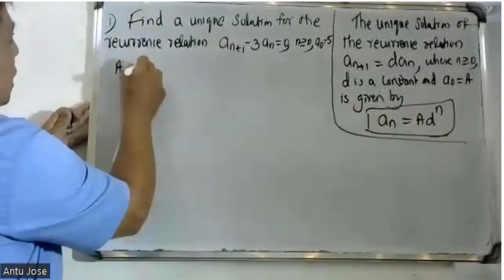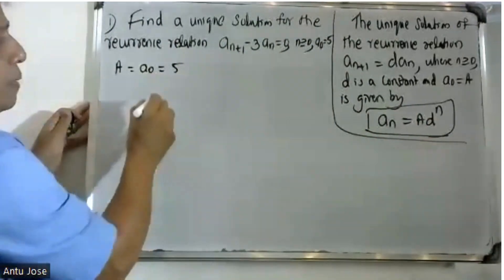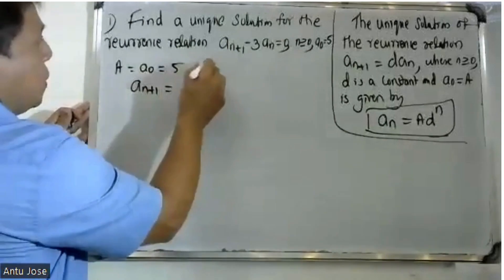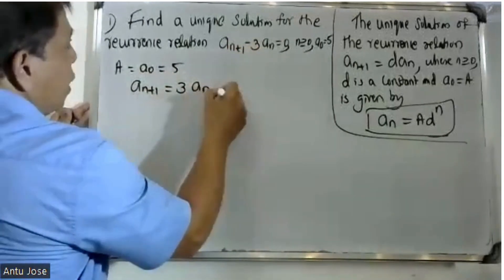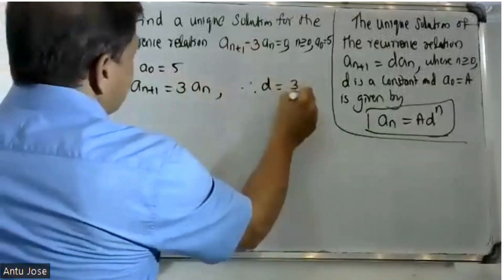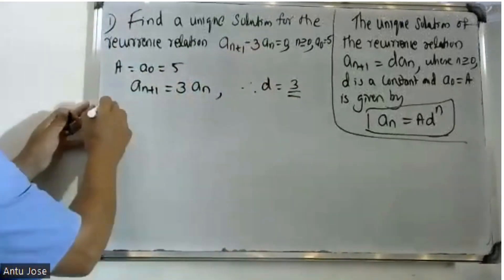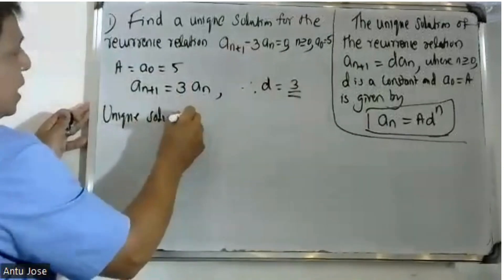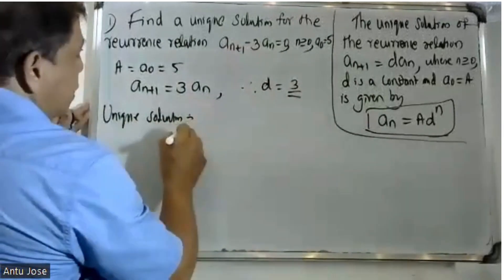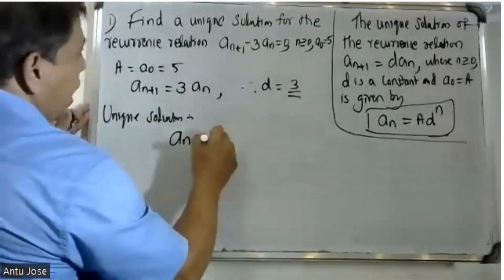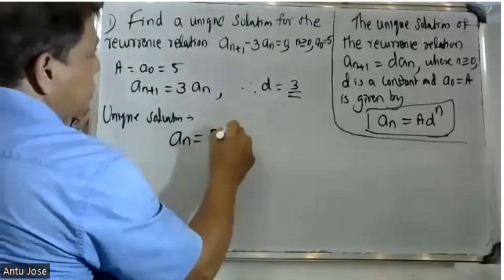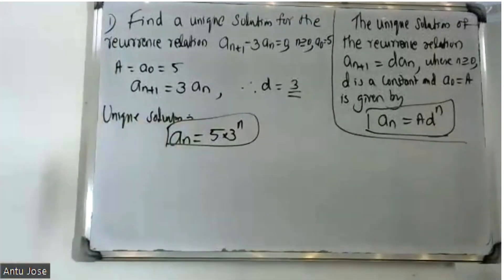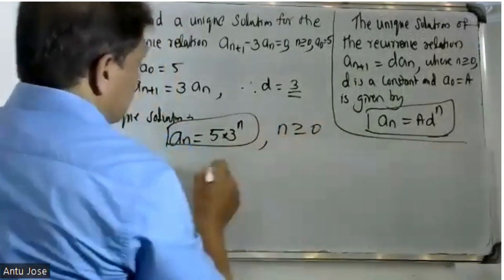For a_0 equal to 5: a_{n+1} equals 3a_n, therefore d is equal to 3. Therefore the unique solution is a_n = 5 * 3^n, where n is greater than or equal to 0.